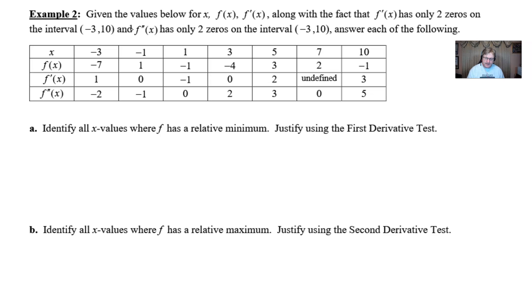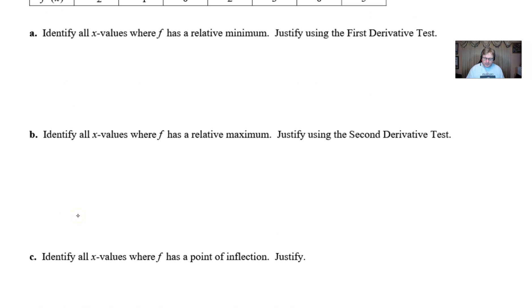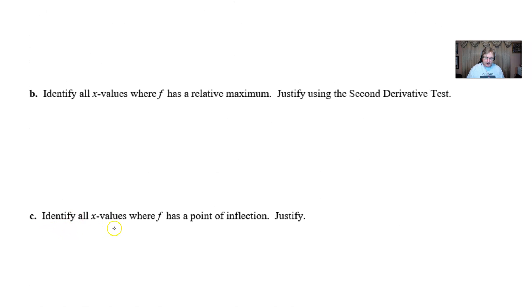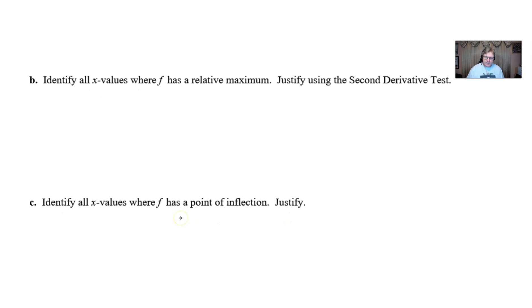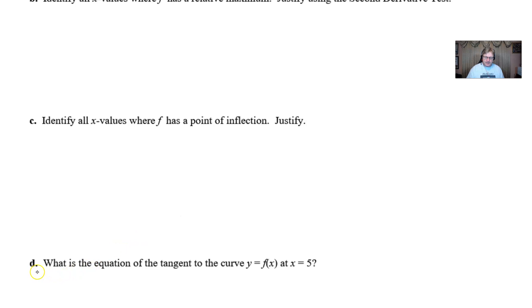Part A: identify all x-values where f has a relative minimum, justified using the first derivative test. Part B: identify all x-values where f has a relative maximum, justified using the second derivative test. Part C: identify all x-values where there's a point of inflection with justification. Part D: what is the equation of the tangent line to f(x) when x equals 5?